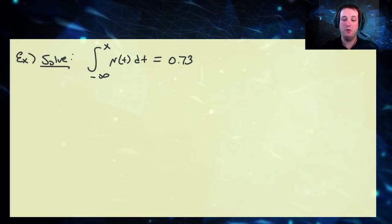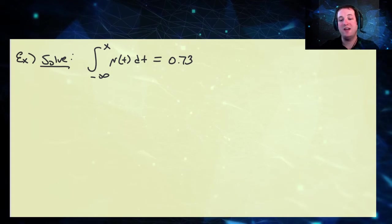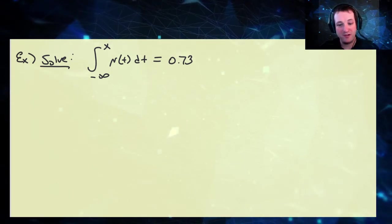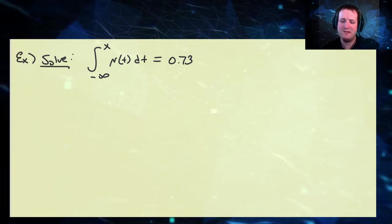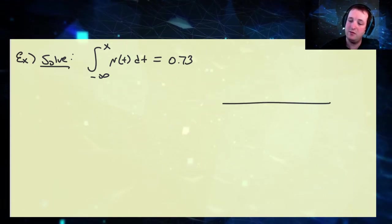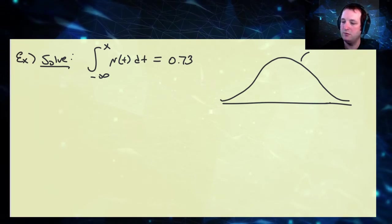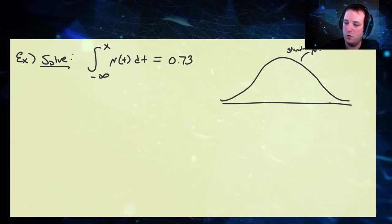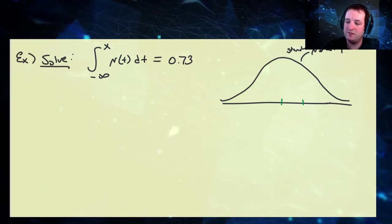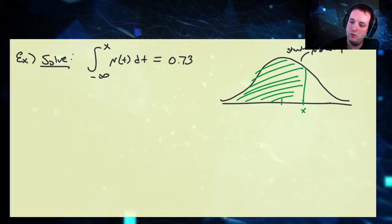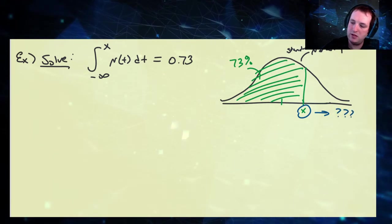Let's begin with a very basic example. Let us solve this integral equation: the integral from minus infinity to x of the standard normal distribution n(t) dt equals 73%. So what exactly does this mean? Assuming this is our standard normal PDF, we want the integral from minus infinity to some number x, and we want this area to be equal to 73%. What is this x equal to? Clearly that's going to be the 73rd percentile of the standard normal random variable.